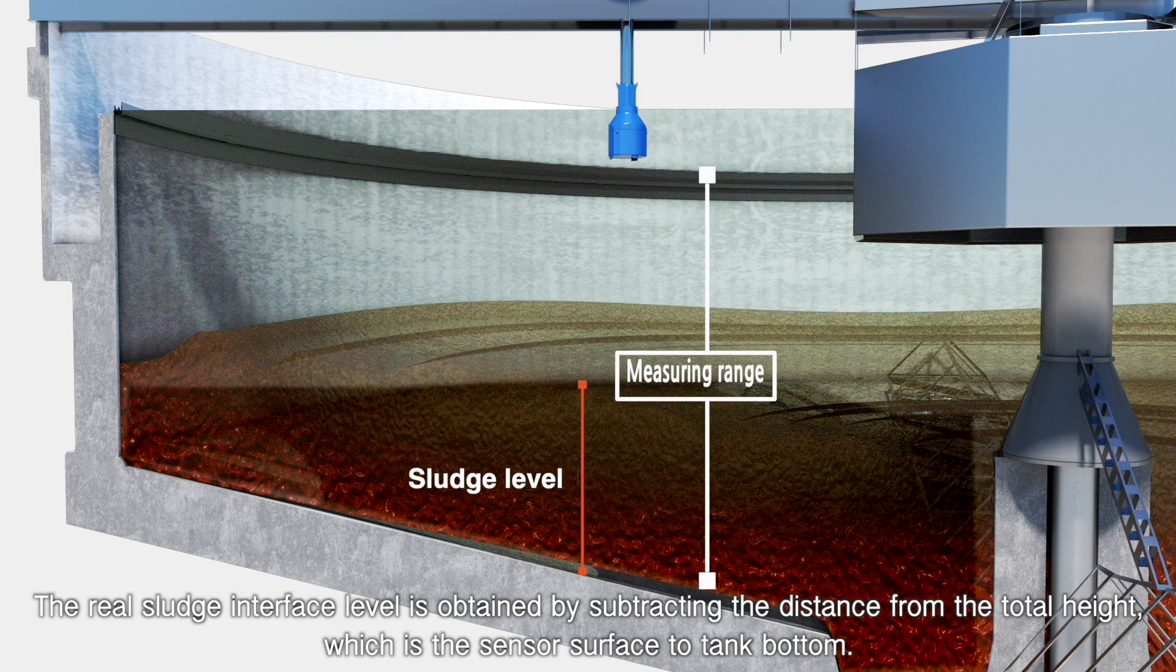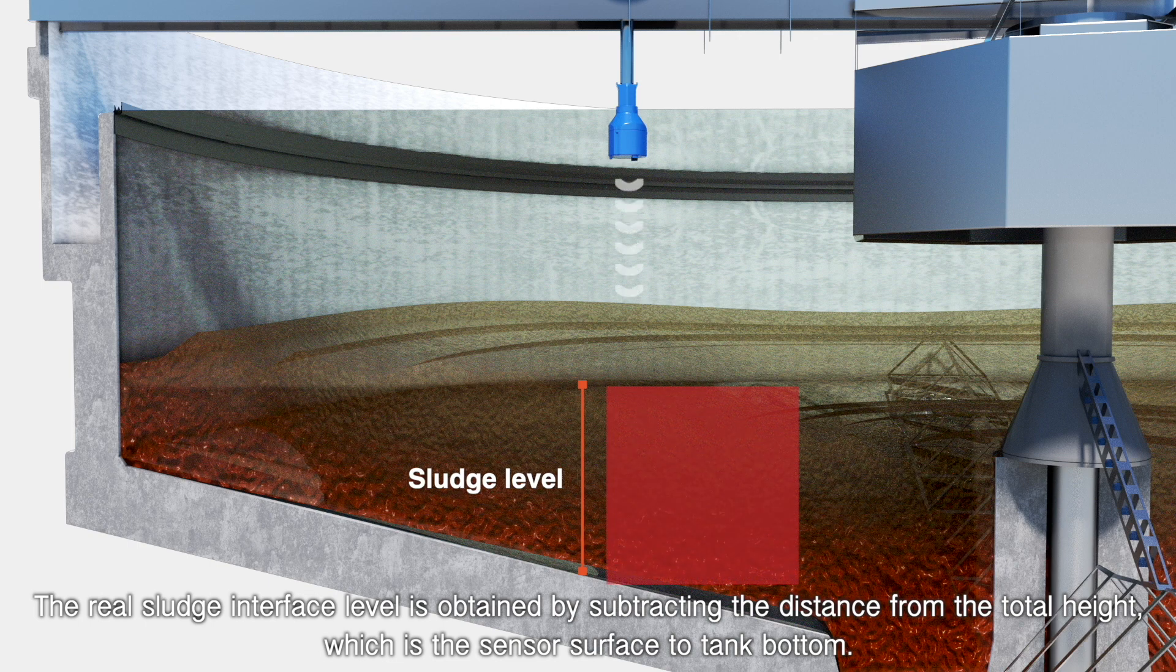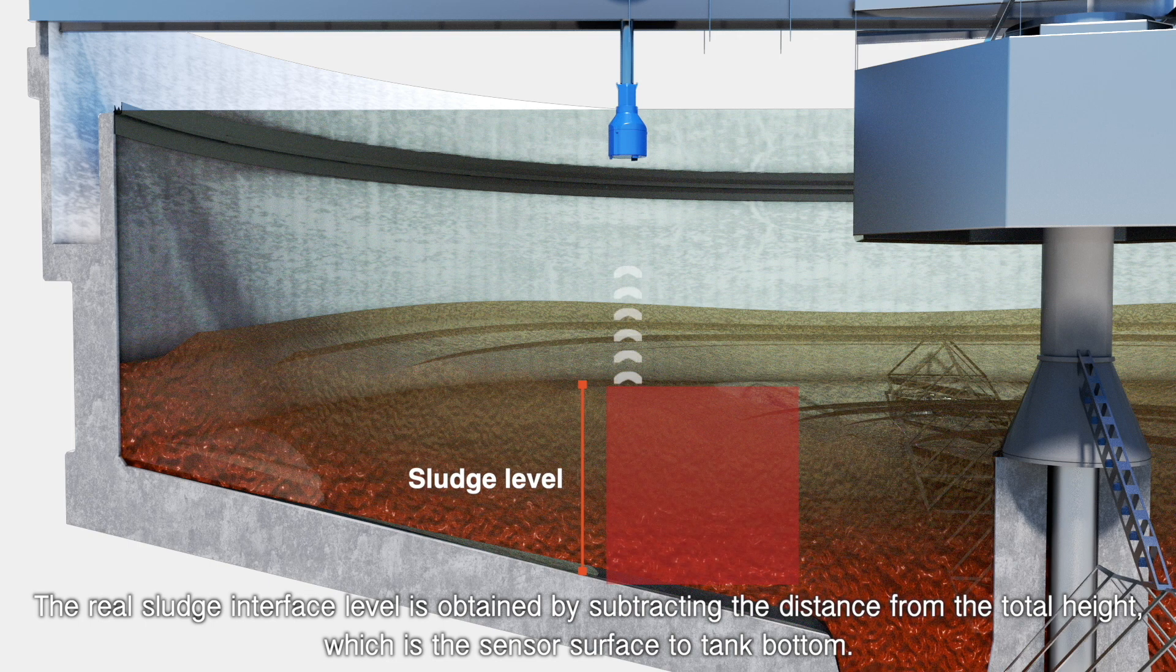The real sludge interface level is obtained by subtracting the distance from the total height, which is the sensor surface to tank bottom.